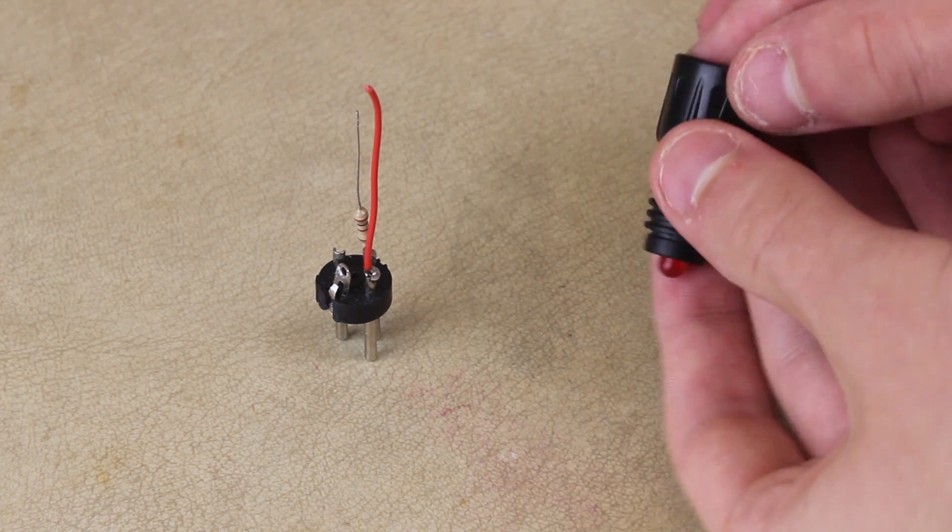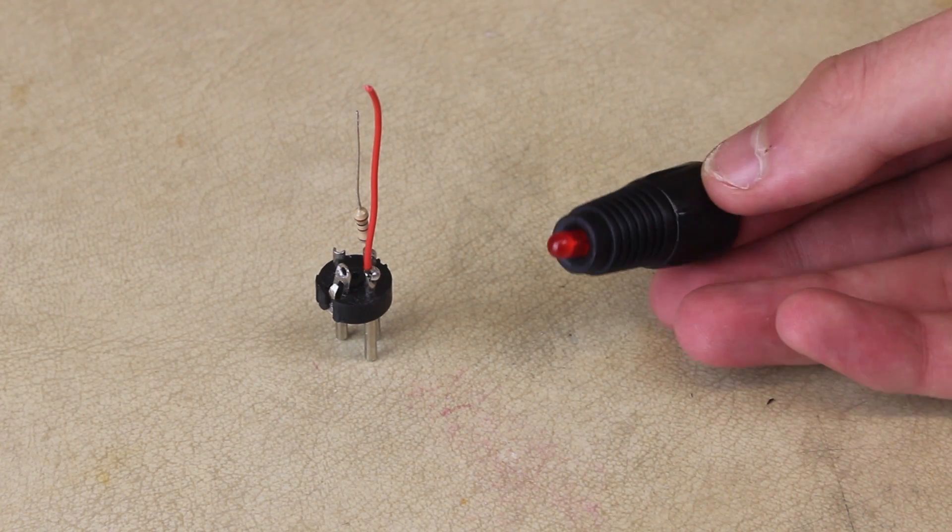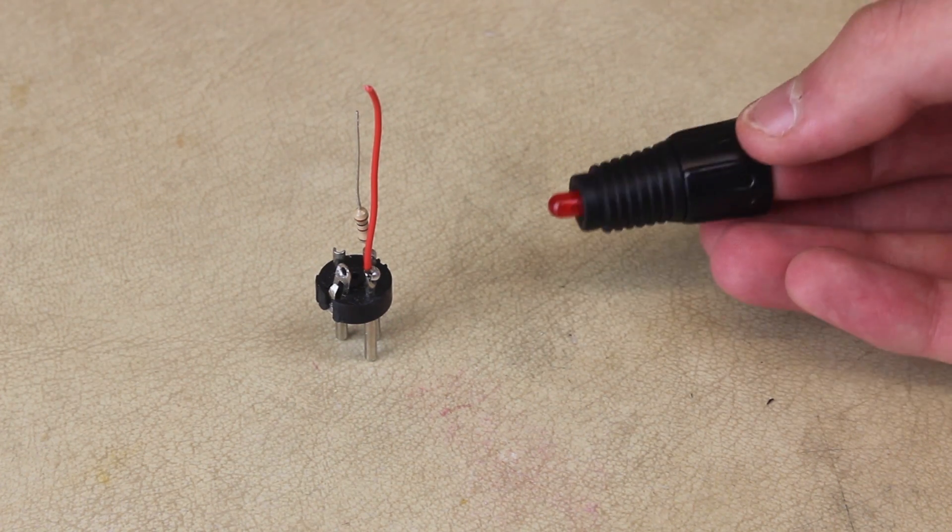The wire needs to be just the right length for the LED to poke out the end of the plug, so I suggest you don't cut them until you know exactly what length they need to be.